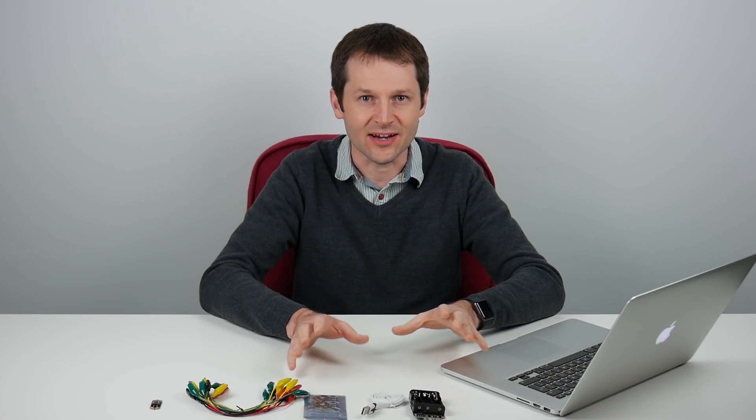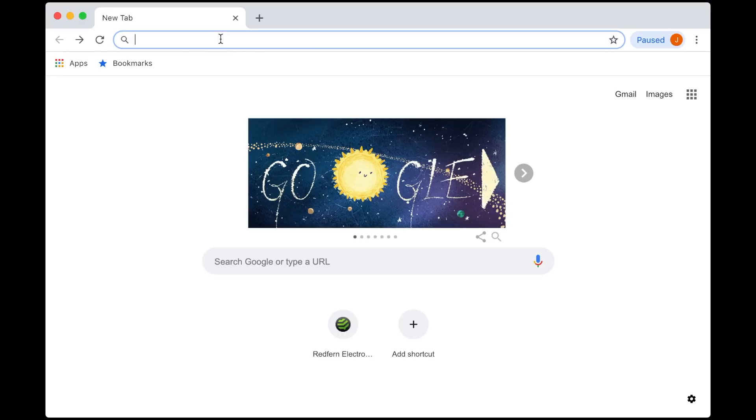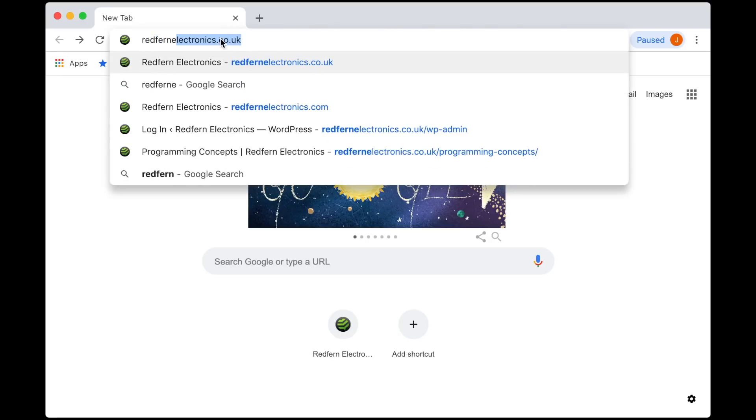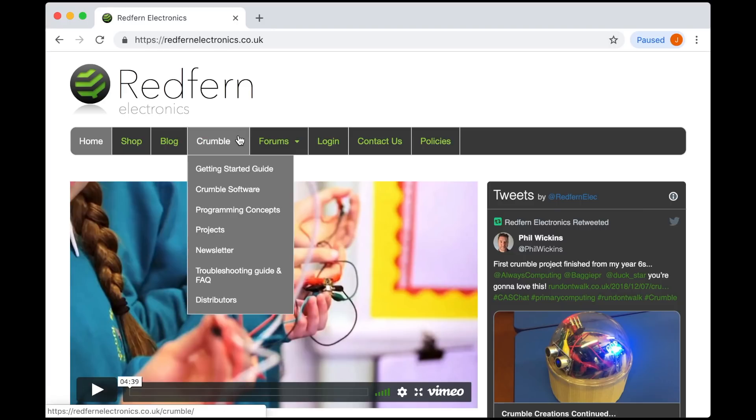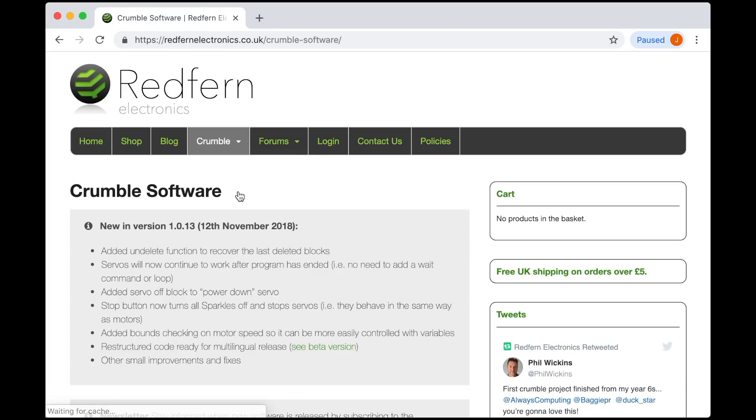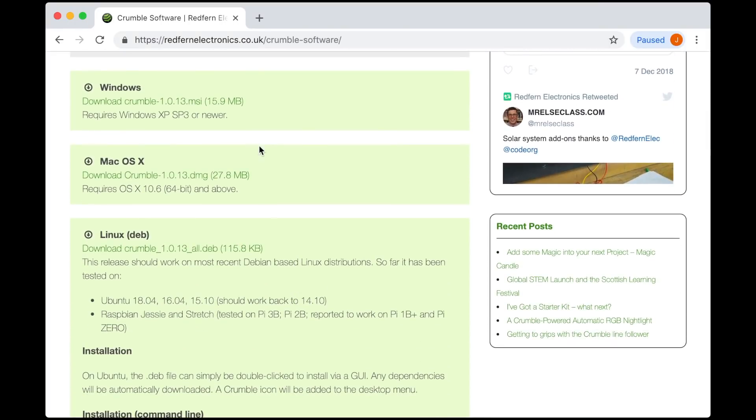Before we get started we need to go to the website and download the Crumble software. I'm going to go to Redfin Electronics, then to Crumble and Crumble software. You can download the software for Windows, Mac or Linux from this website. Download and install it normally, and the drivers are all built in so you should be ready to go once the software is installed.